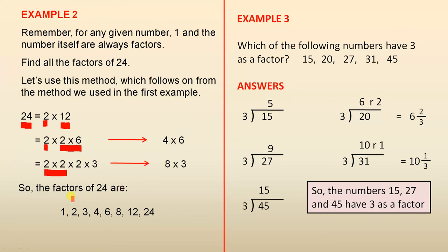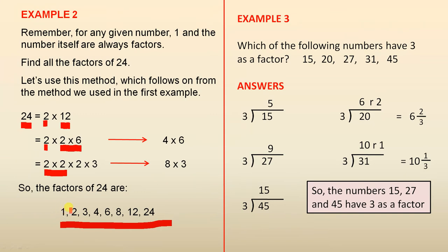All these ways help us to find the factors. So all the factors of 24 are these 8 numbers. There are 8 of them altogether. Don't forget, we already know that 1 and 24 are factors, and this working has helped us find the other 6.